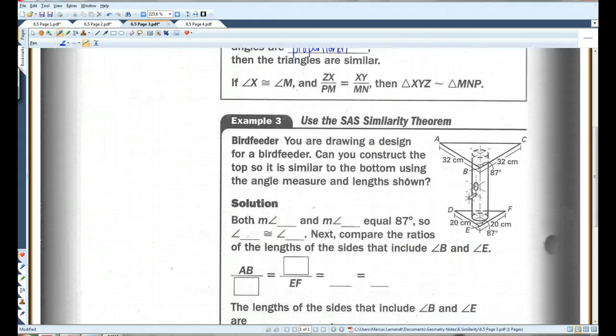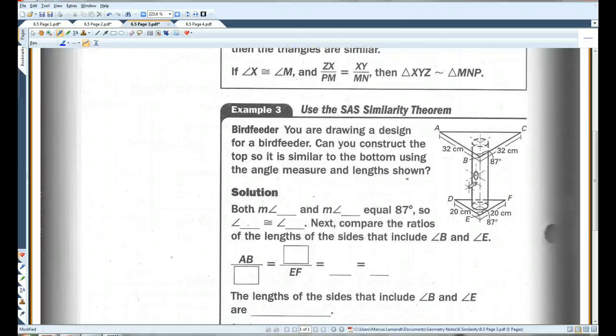So, for example, you are drawing a design for a bird feeder. Can you construct the top so it's similar to the bottom using the angle measure and the lengths shown? In the diagram, both the measure of angle B and the measure of angle E equal 87 degrees, as you can see here and here. So, angle B is congruent to angle E. We have one angle.